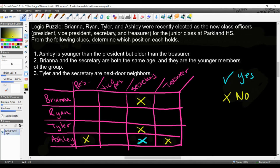Let me repeat that just in case you missed that. If Ashley were the secretary, she would be one of the youngest ones in the group because according to clue number two, Brianna and the secretary are the youngest ones, which means they can't be older than anybody else. And they're also the same age. So because of that, Ashley is not the secretary, which means that the only option for secretary is going to be Ryan. So Ryan is the secretary. If Ryan is the secretary, that means that Ryan cannot be the president, he cannot be the vice president, and he cannot be the treasurer.